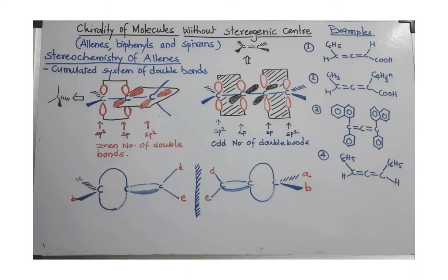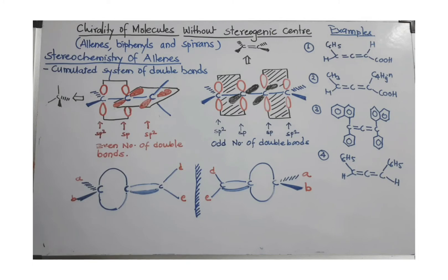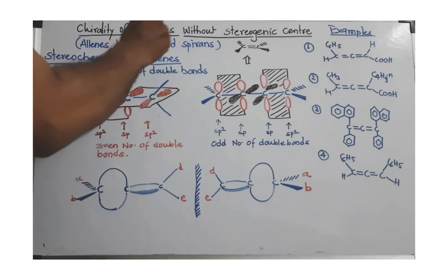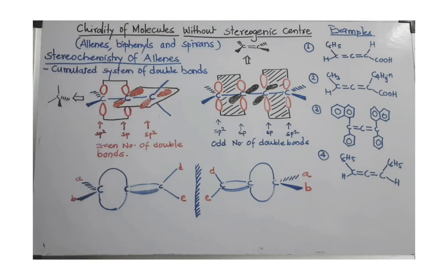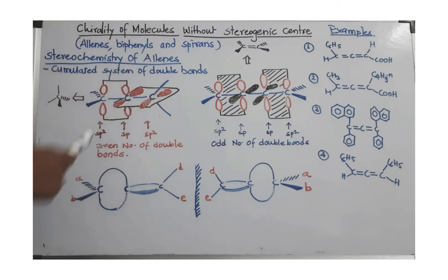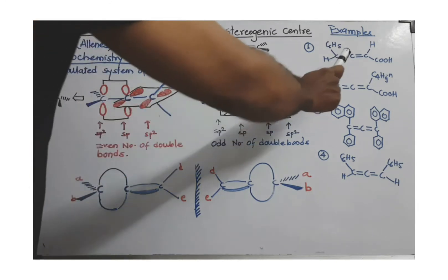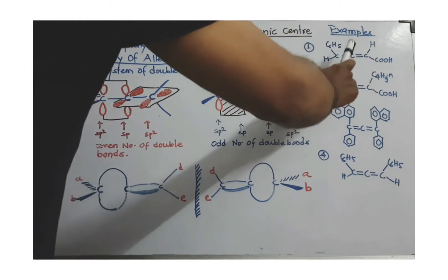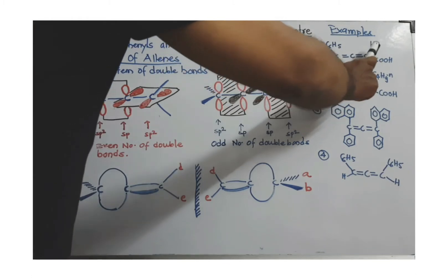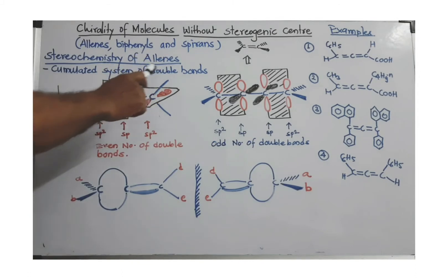The first example is the stereochemistry of allenes. To understand the optical activity of allenes, we must first know their structure. Allene, or cumulene, refers to an accumulated system of double bonds — cumulated means continuous double bonds present one after another, and that is called allene.